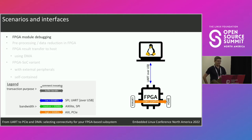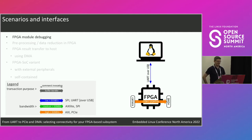A very simple but very justified reason to communicate between a host system and an FPGA-based subsystem is debugging what is happening in the FPGA in a more comfortable way than with JTAG counting zeros and ones. This is an application which doesn't require a lot of bandwidth, so you would probably pick a UART over USB connection.